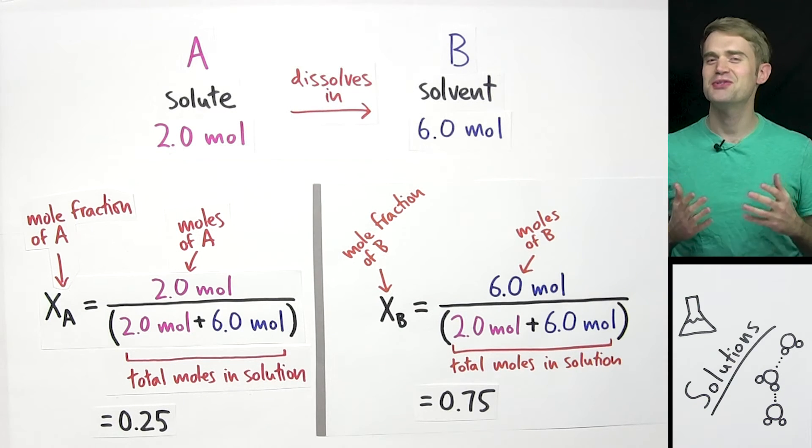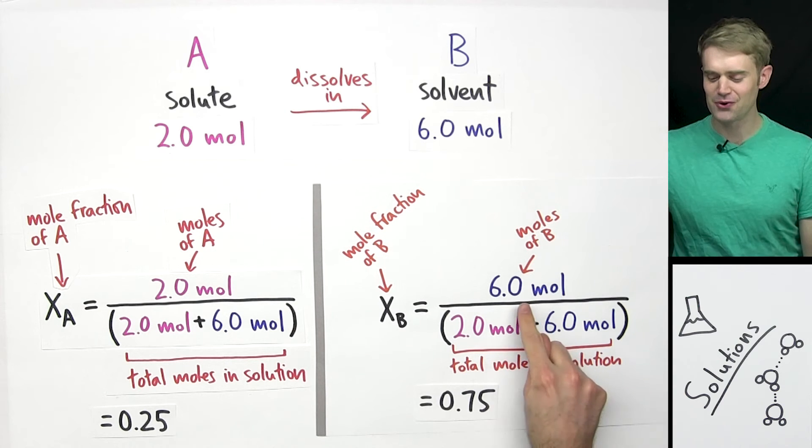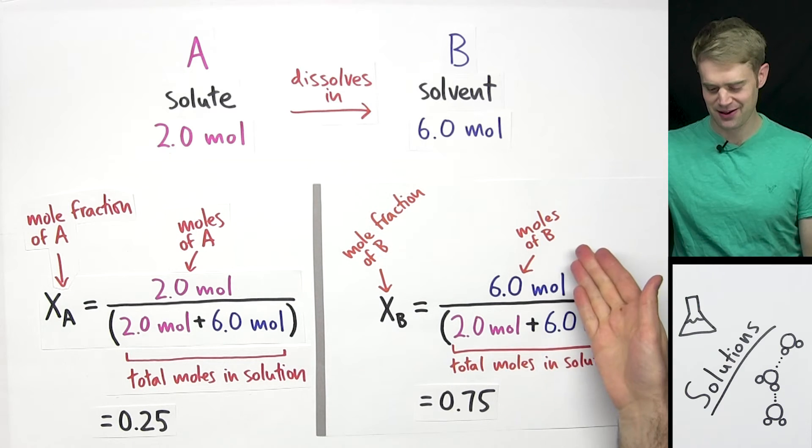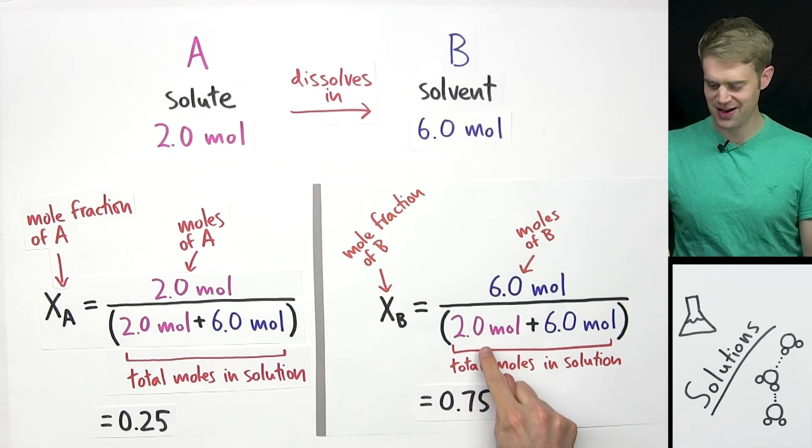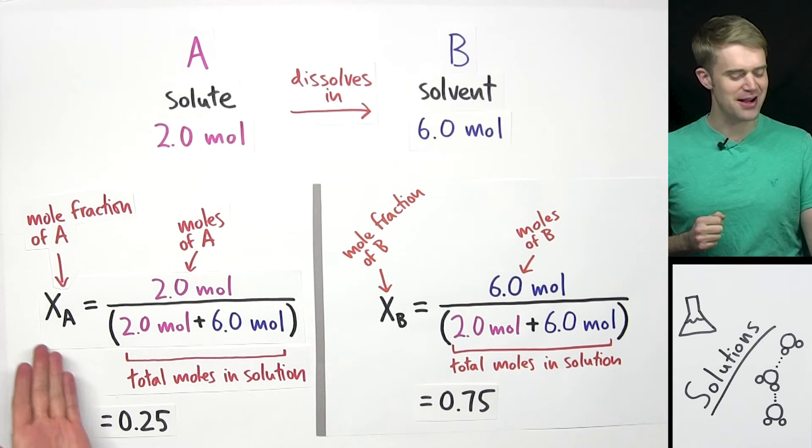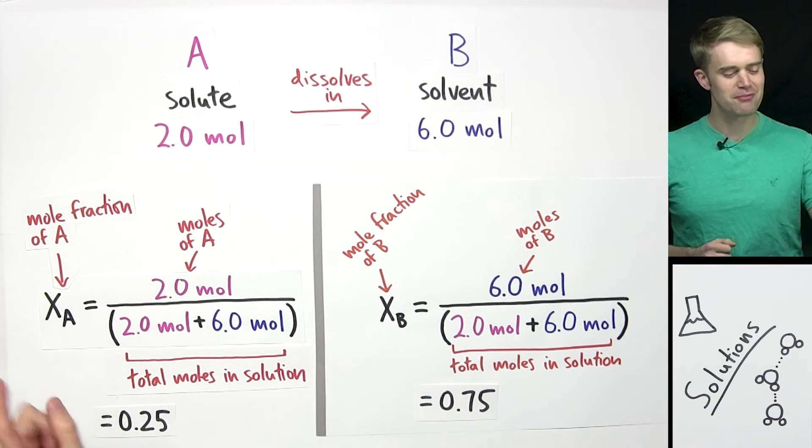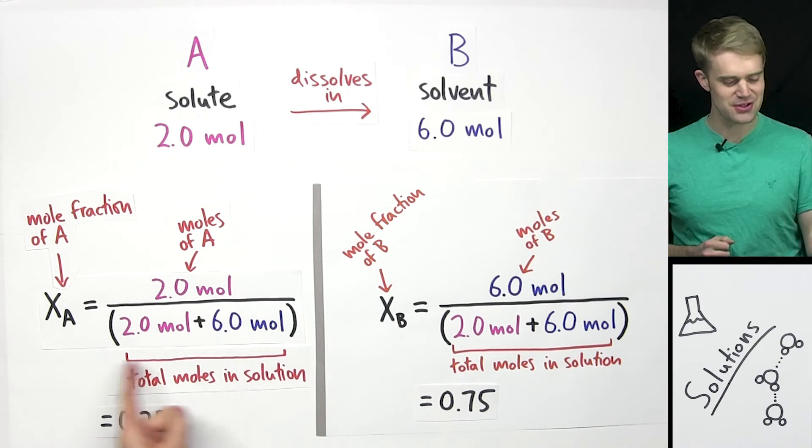You can probably see what's going on here. When we calculate the mole fraction of B, we put the number of moles of B on top and then on the bottom the total number of moles, the number of moles of A plus the number of moles of B. When we calculate the mole fraction of A, we put the number of moles of A on top and then the total number of moles on the bottom.